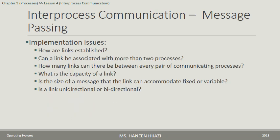Implementation issues for the communication link include: (1) How is the link established? (2) Can a link connect more than two processes? (3) How many links can exist between a pair of communicating processes? (4) What is the capacity of the link? (5) Can the message size be fixed or variable? (6) Is the link unidirectional or bidirectional? In a unidirectional link, a process may only send or only receive — not both — meaning data flows in one direction only.